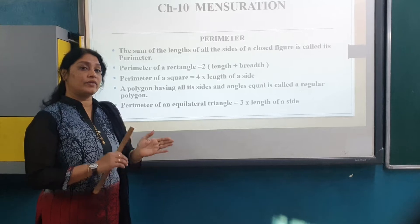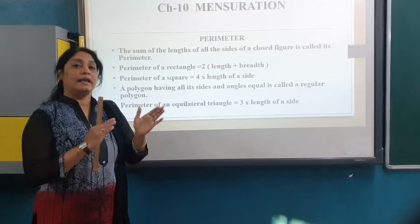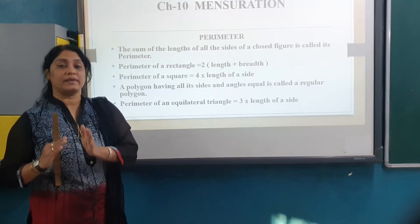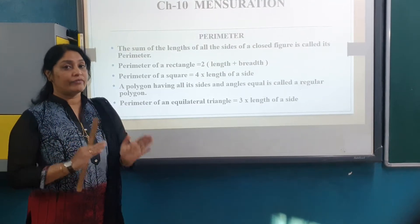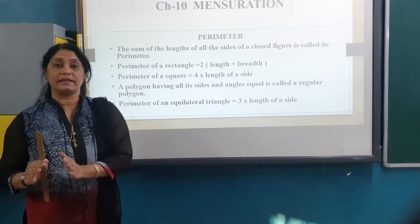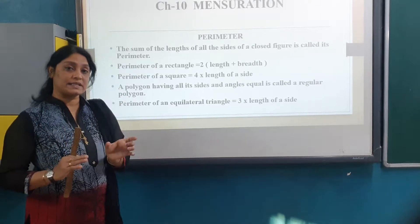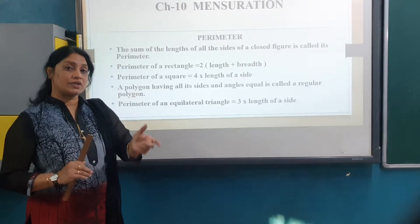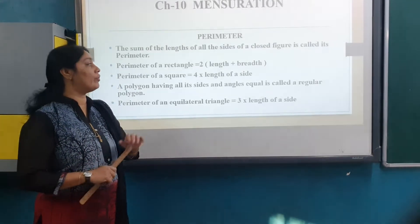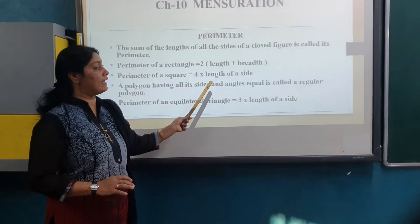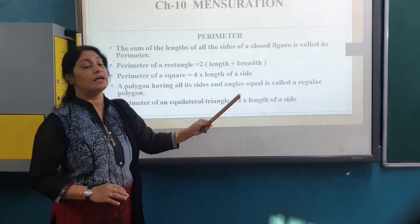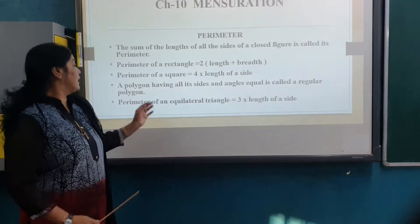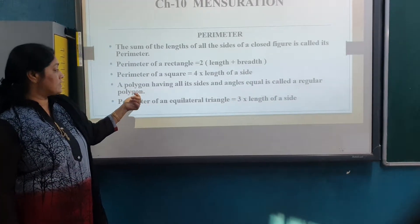Otherwise, what you have to do is length plus length plus length plus length. But with the shortcut it is 4 multiply by length of a side.